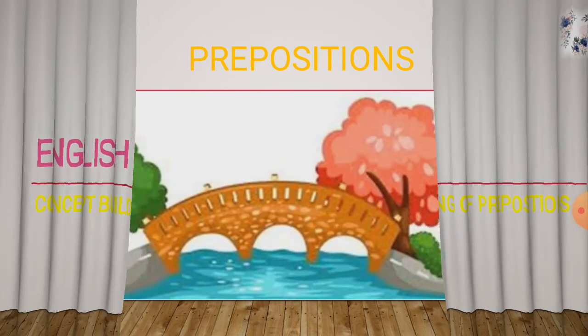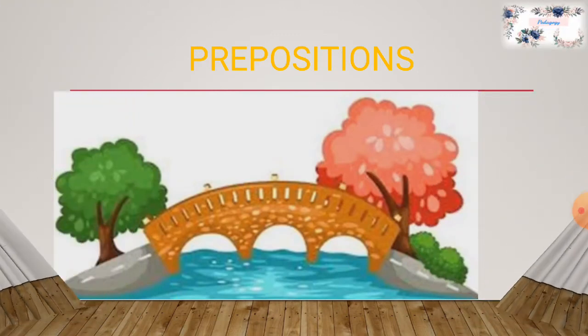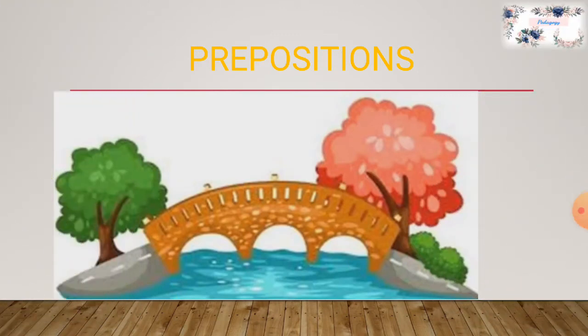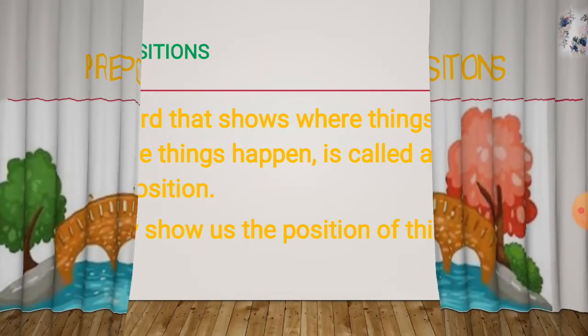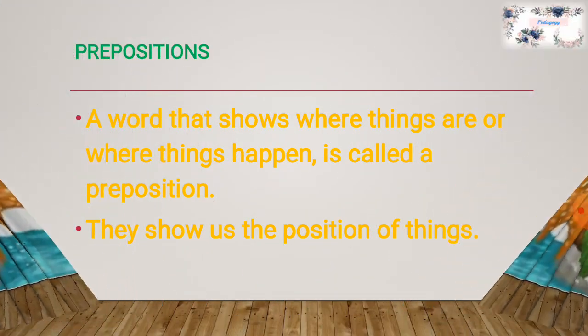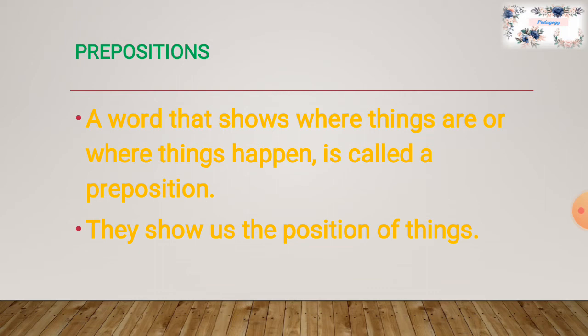We can explain prepositions by splitting that word into two parts: prep and position. So we can define it as allocating the position — prepositions. In simple words, to make it more understandable, a word that shows where things are or where things happen is called a preposition. They show us the position of things.